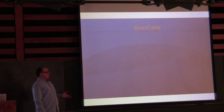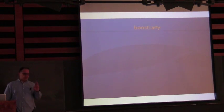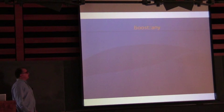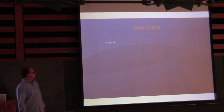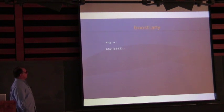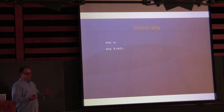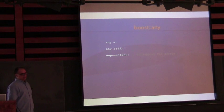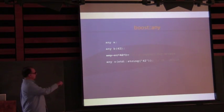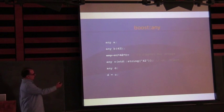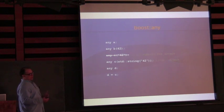Boost.Any was introduced about 12 or 13 years ago. It was originally written by Carolyn Any. It's a really simple class. You declare any and then assign something to it — it can be anything except a raw array, but you can wrap a char array into a string. It has value semantics, it's well known, and people are pretty used to it.